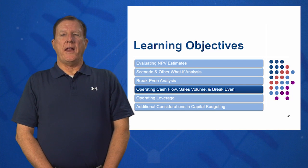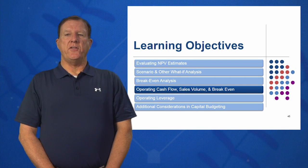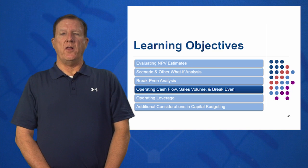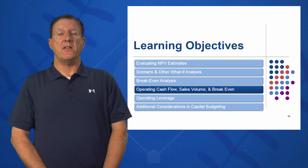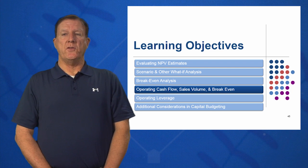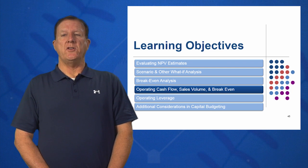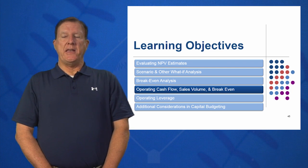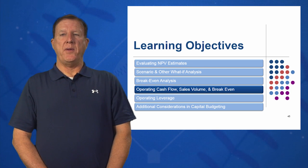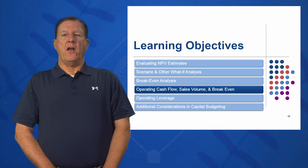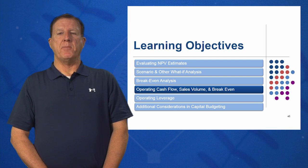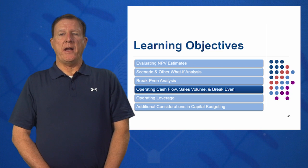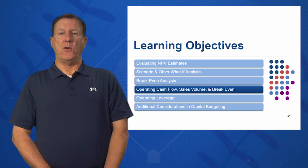In Learning Objective 4, we're looking at OCF sales volume and breakeven points. What's the relationship between OCF and breakeven points? What is OCF at the accounting breakeven specifically? We'll see that it is equal to depreciation, because EBIT is zero, taxes are zero, and NPAT is zero. We'll look at OCF at the cash breakeven, which is equal to zero, and OCF at the financial breakeven, which is the point where NPV equals zero.